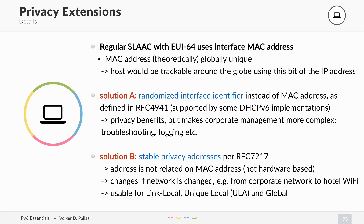Solution B is called Stable Privacy Addresses and it's defined in RFC 7217. The address is still not related to the MAC address, so it's not hardware-based, but it only changes if your network changes. So if you switch from your corporate network to a hotel WiFi in China, you get a new address and nobody can track you. But if you stay in your corporate network, you will always have the same address. This feature works for link-local, unique local, and also global scope. This is the best option.